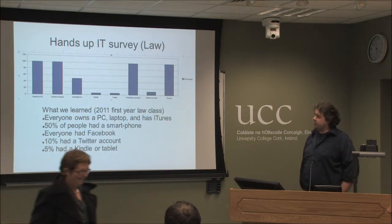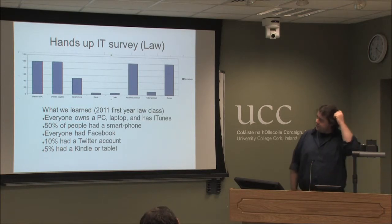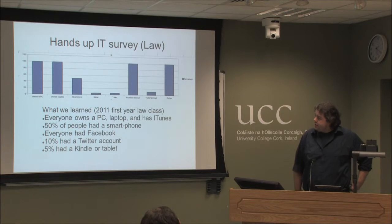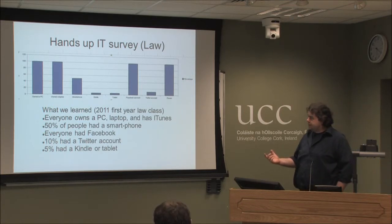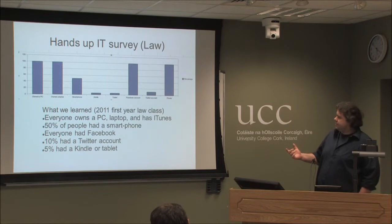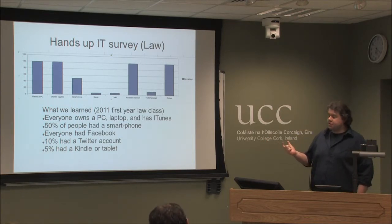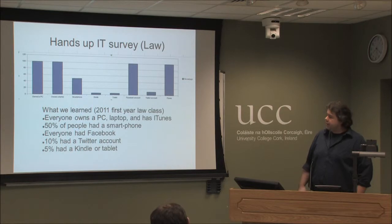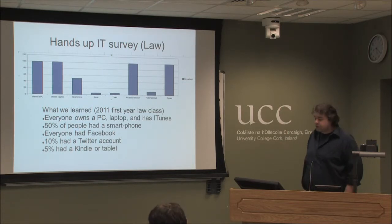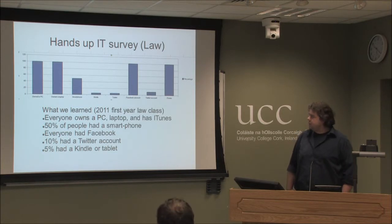Another thing I do is a hands-up IT survey when first years come in. Interesting stuff I found gives us an idea of where to go down the road. So: everyone owns a PC, everyone owns a laptop, 50% of people own a smartphone, everyone has a Facebook, everyone has iTunes, 10% have a Twitter account, and only 5% have a tablet or a Kindle. I was kind of shocked at the Twitter thing — I thought there would be a lot more take-up on Twitter, but take-up on Facebook is really big. I think they just don't understand how to engage with it.